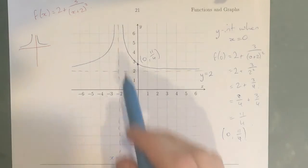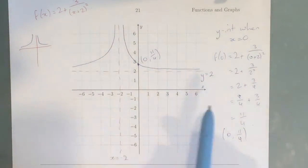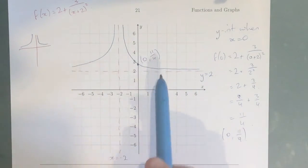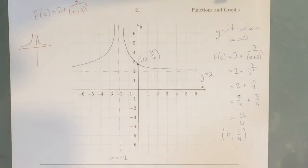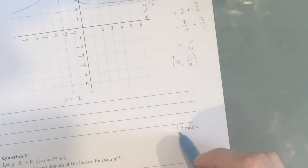And that's it. So we've labelled our asymptotes, we've drawn our asymptotes, we've drawn our graph, and we've also drawn in our intercepts. And that's it. And this is actually worth three marks.